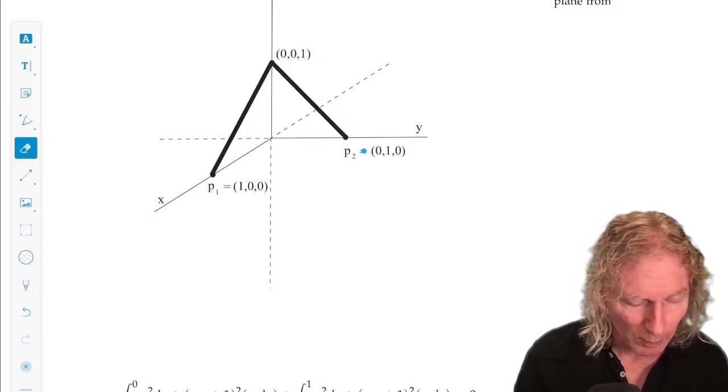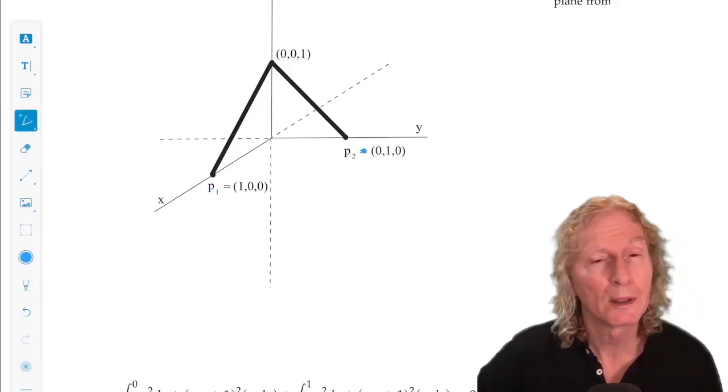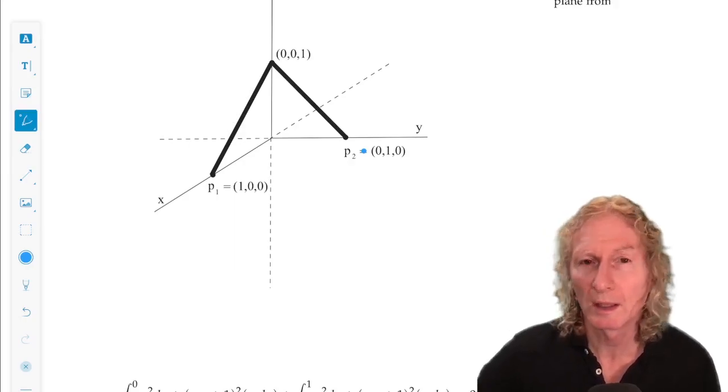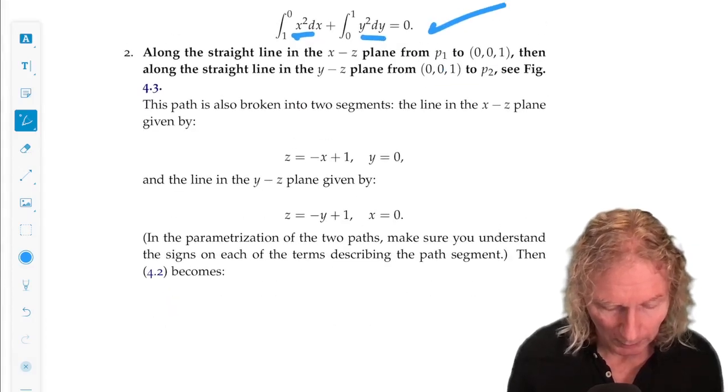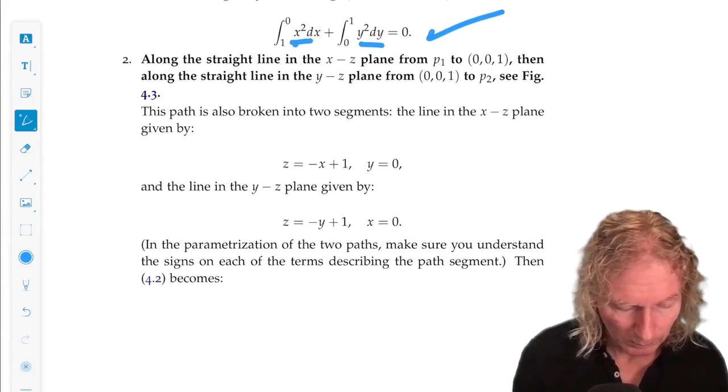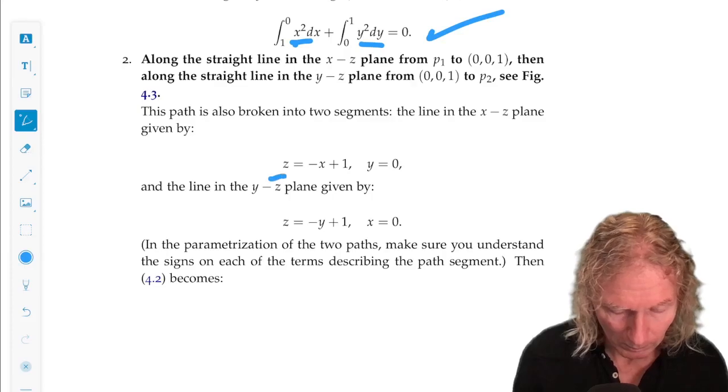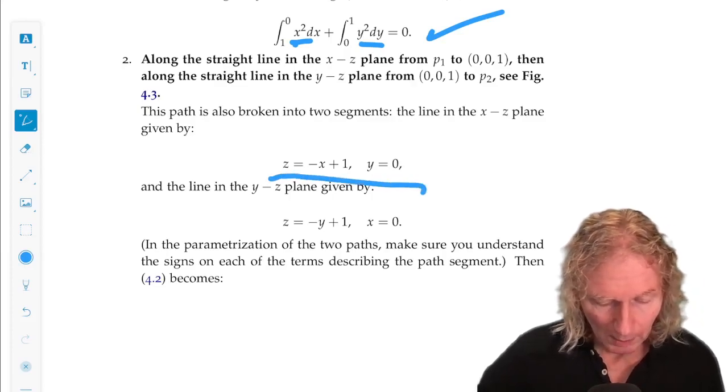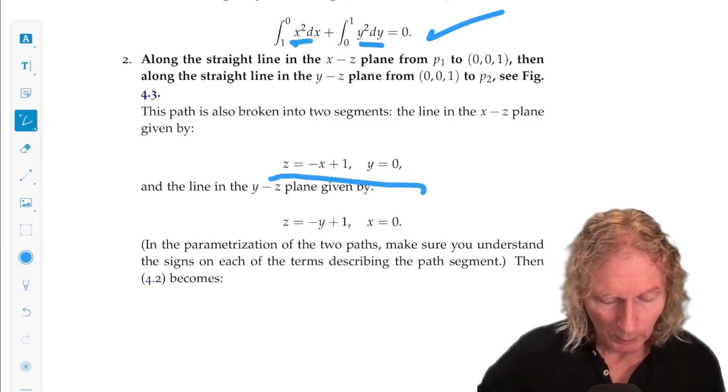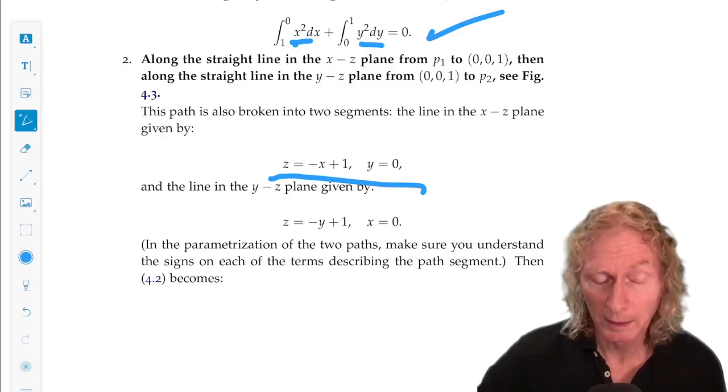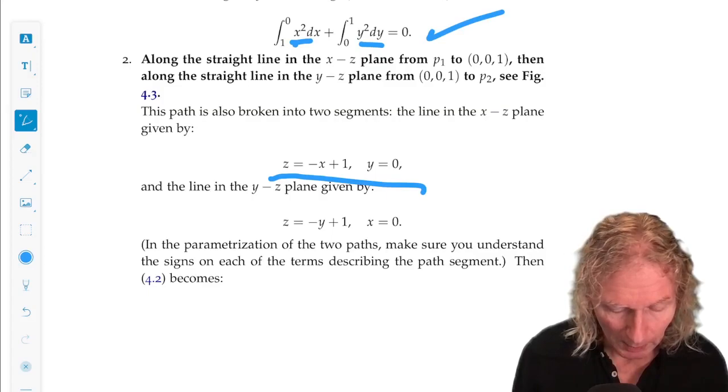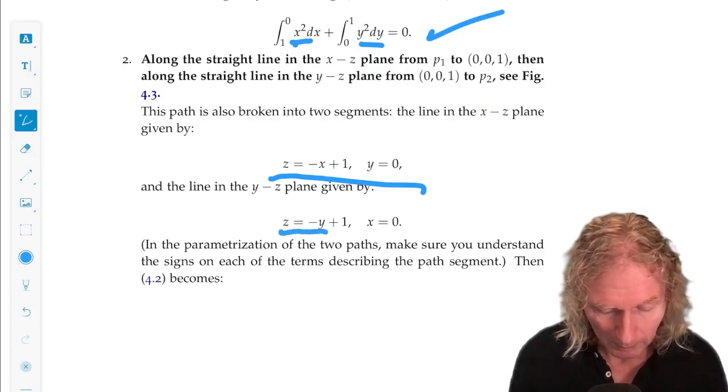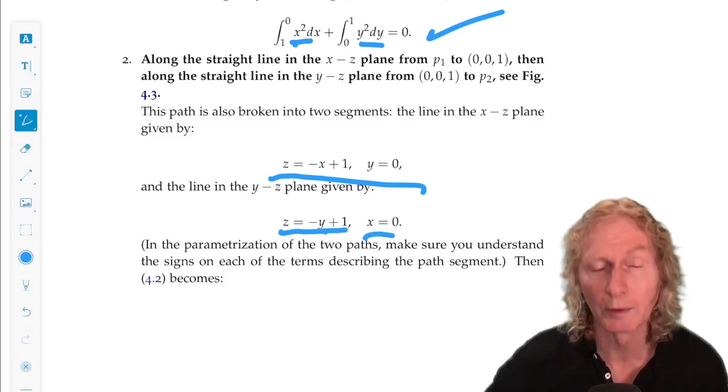So we have to parameterize the path, so we know the equations for these line segments in those planes. And then we can relate dz to dx, with dy as 0, and in the y-z plane, the line segment is given by this, with dx equals 0.